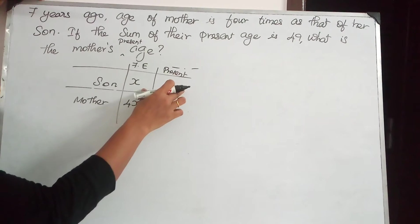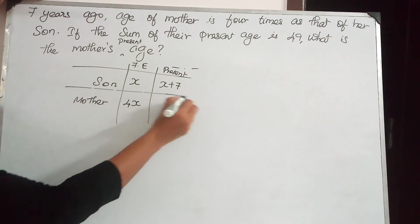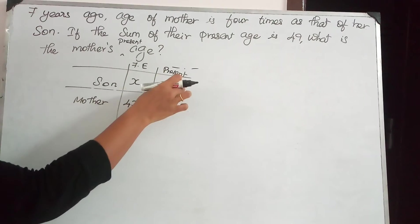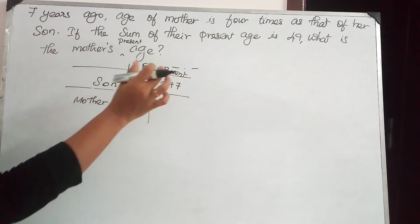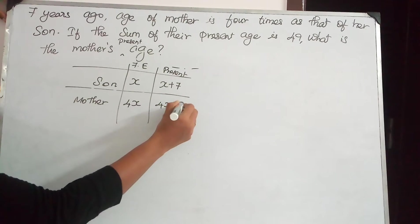What is the present age? We have to add 7 here. So if age of son is X before 7 years, now the present age will be X plus 7. The age of mother will be 4X plus 7.